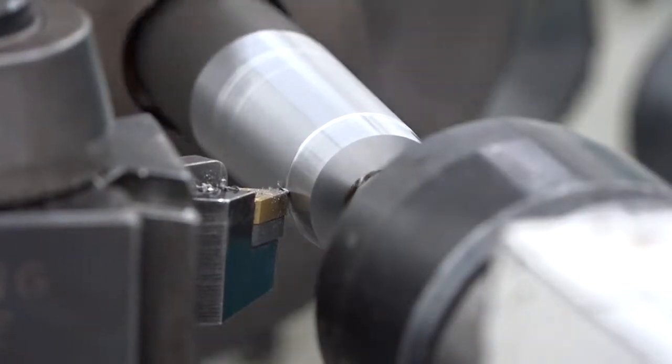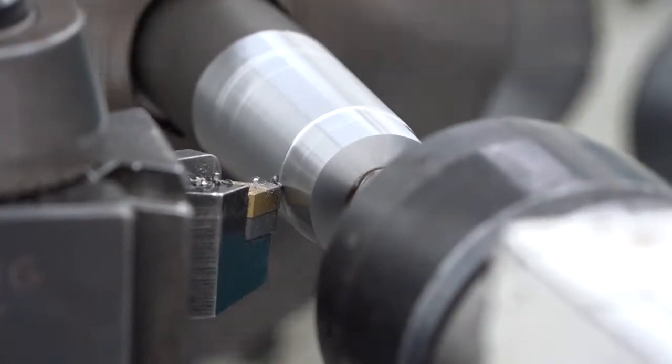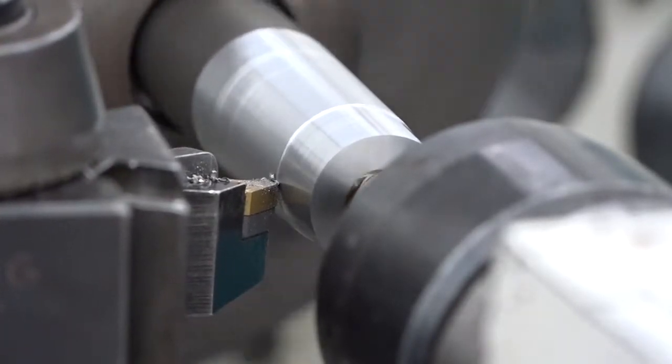Long, slight tapers can be cut using the tailstock offset method. Power feed allows you to achieve good finishes.